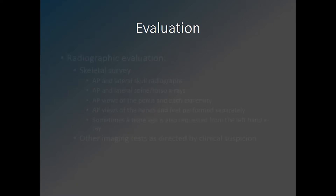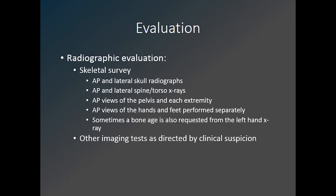The standard workup of a skeletal dysplasia is performed from a radiographic skeletal survey. This includes AP and lateral skull x-rays, AP and lateral torso to include the spine and chest wall, AP view of the pelvis, and AP view of the extremities. In a neonate, each extremity may be evaluated on a single radiograph, but in an older child the upper and lower portions of each extremity should be imaged separately. AP radiographs of the hands and feet are performed separately, and in some cases a bone age may be assessed from the left-hand radiograph.